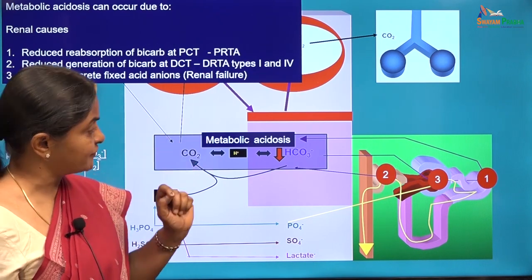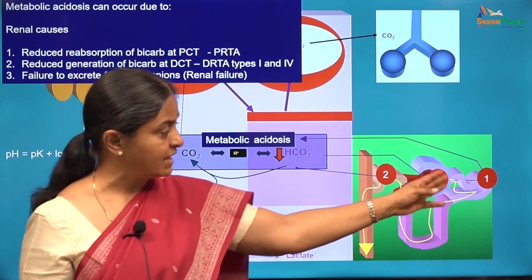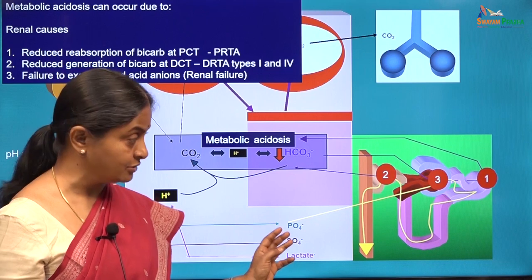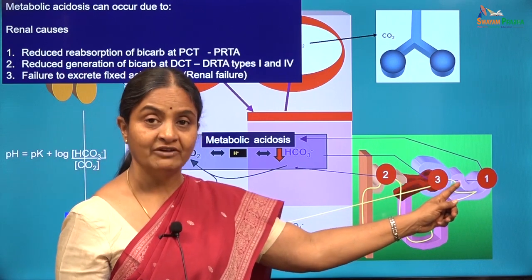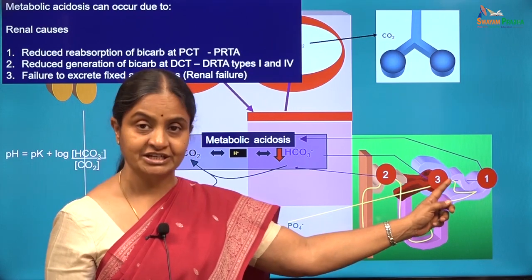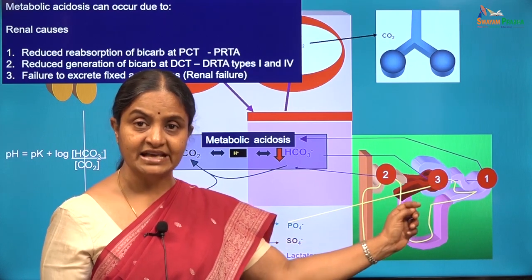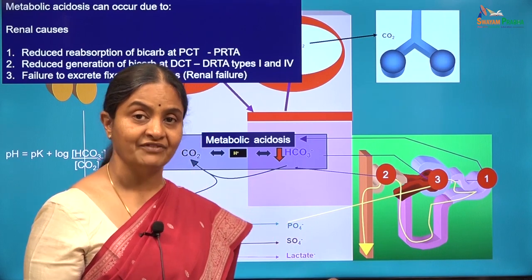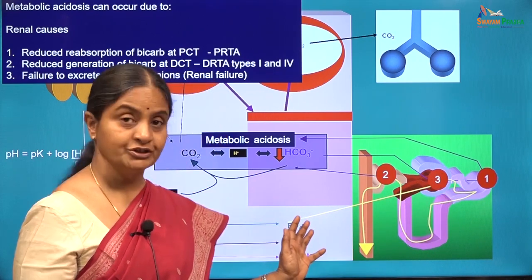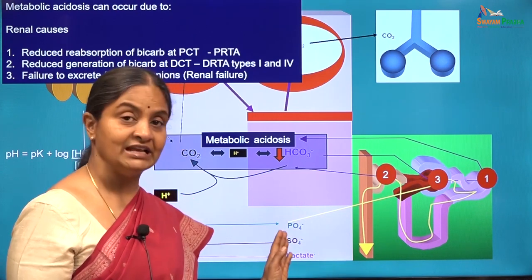A third major function of the kidney is to filter the fixed acid anions and eliminate them unabsorbed. Therefore, elimination of the fixed acid anions depends on normal glomerular filtration. Renal failure is by definition a reduction in glomerular filtration rate. The normal is 125 ml per minute; if it reduces to less than 60 ml per minute the condition is called renal failure, and filtration of fixed acid anions will be low, so they will be held back in plasma.